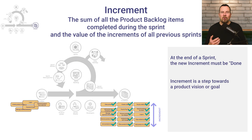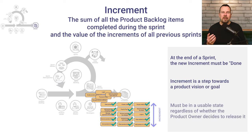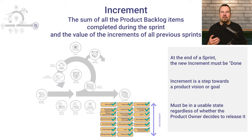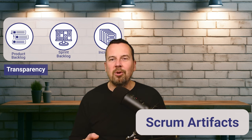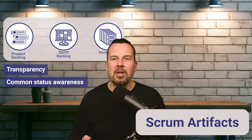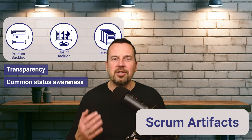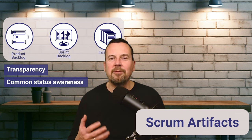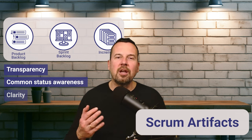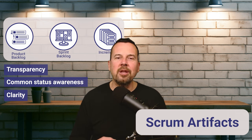The increment is a step towards a product vision or goal and must be in a usable state regardless of whether the product owner decides to release it or not. These artifacts are designed to maximize the transparency of key information so that all stakeholders and everyone on the Scrum team have the same understanding of the project's status. Each artifact serves a specific purpose and helps in the smooth execution of the Scrum framework by ensuring clarity and transparency in the work being done.